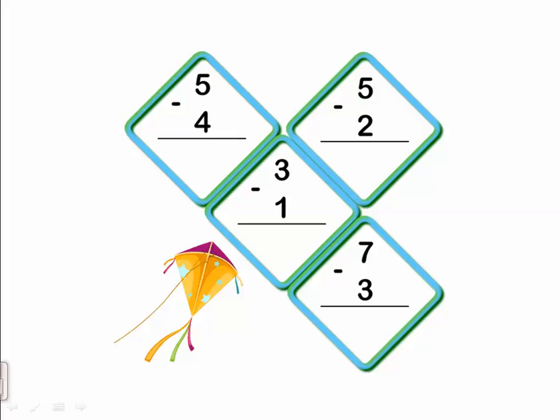Let's go to the next one: three minus one. Let's count after one till three. After one: two, three. How many are left? Two. Then let's go to the next one: seven minus three. The smaller number is three. Let's count after three till seven. After three: four, five, six, seven. So seven minus three equals four.